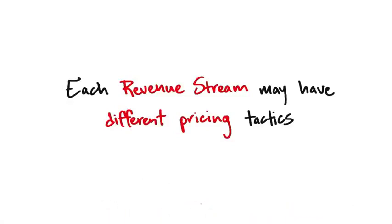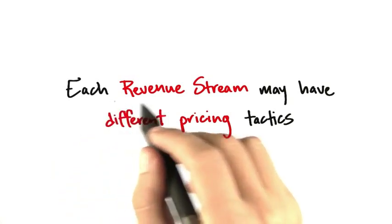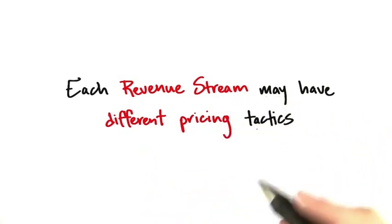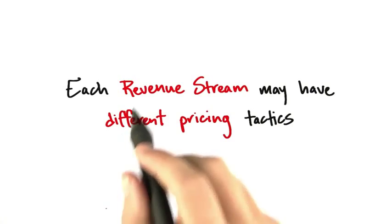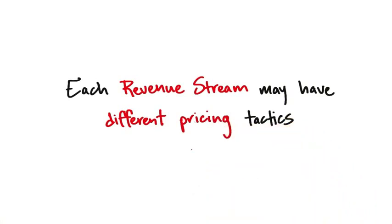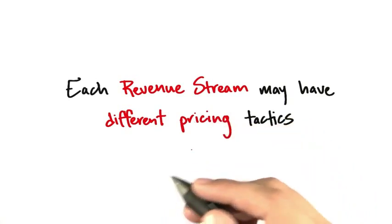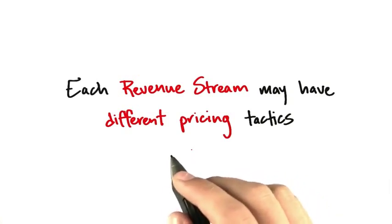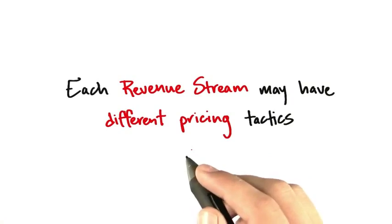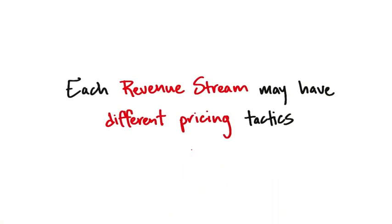In summary, revenue streams might take the form of a whole series of potential strategies. But what's interesting is inside of each revenue stream, you may have different pricing tactics. We just talked about revenue streams — we didn't talk about how much to charge. We talked about the potential ways to charge: licensing, intermediation, direct sales, etc. But how do you think about pricing itself? How do you set prices? Let's take a look.